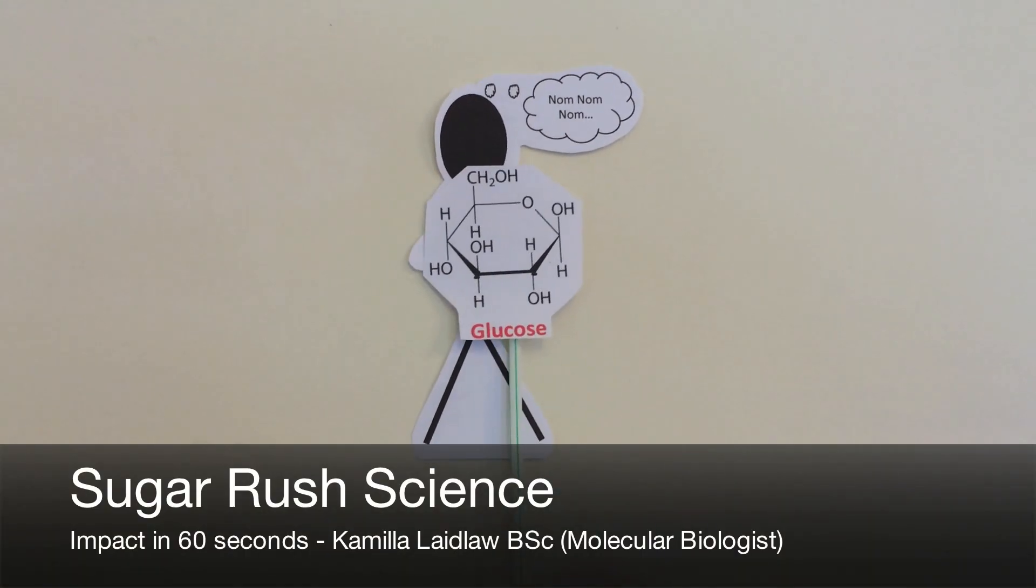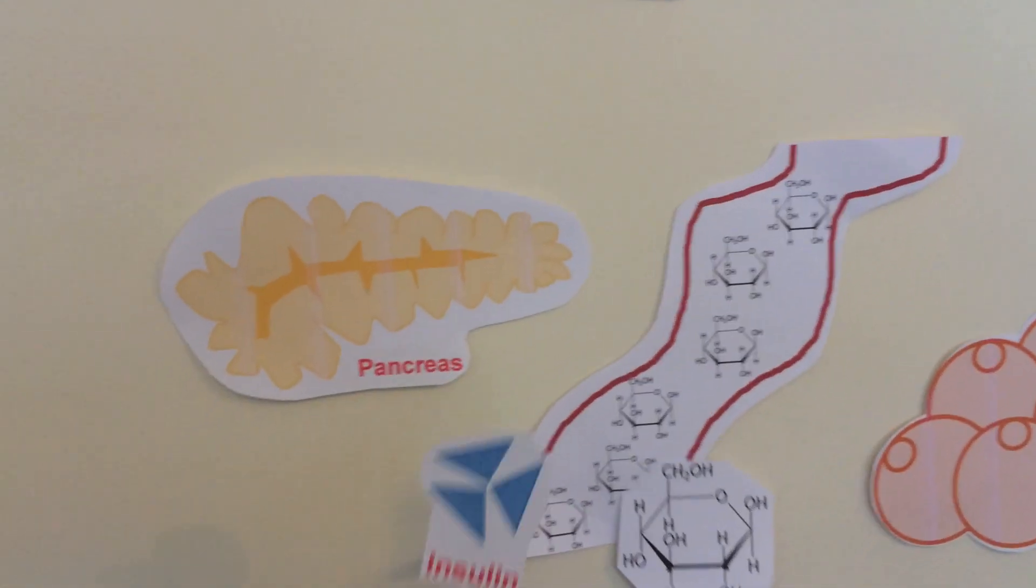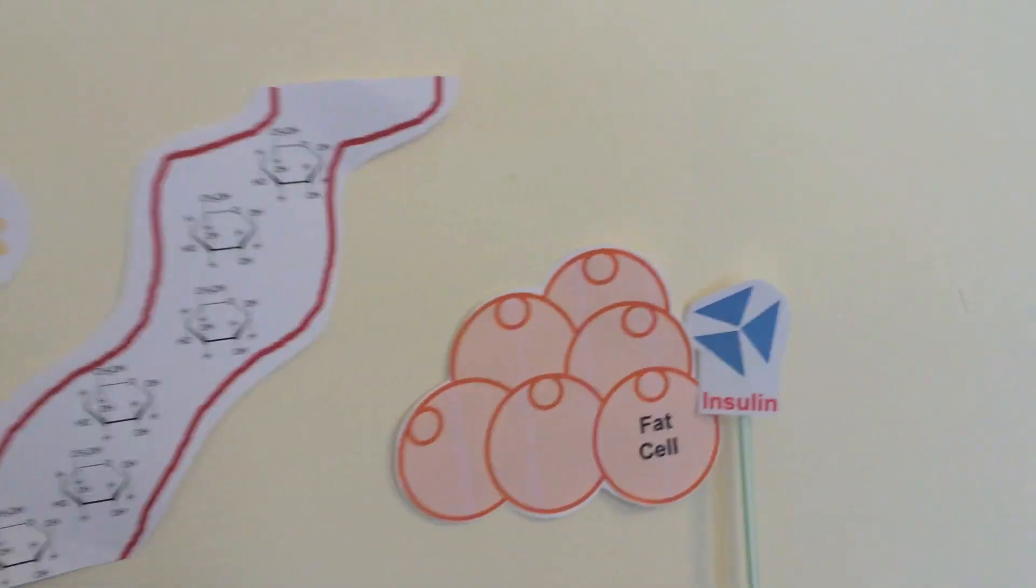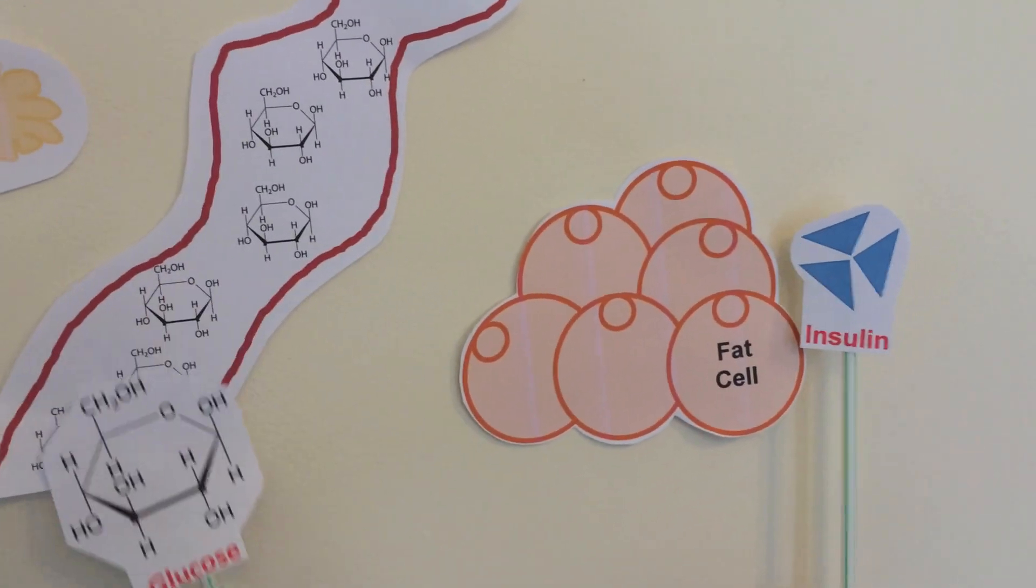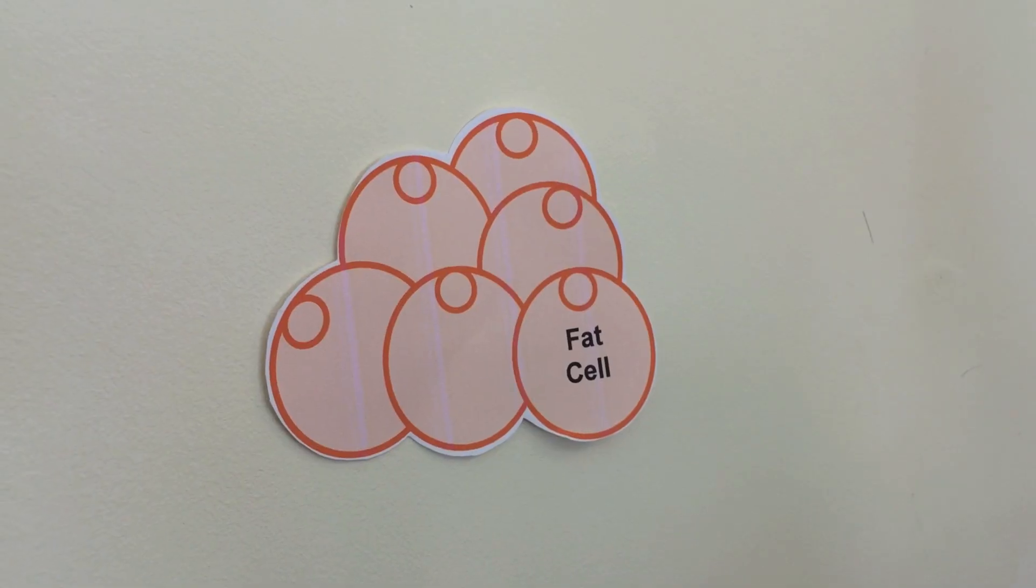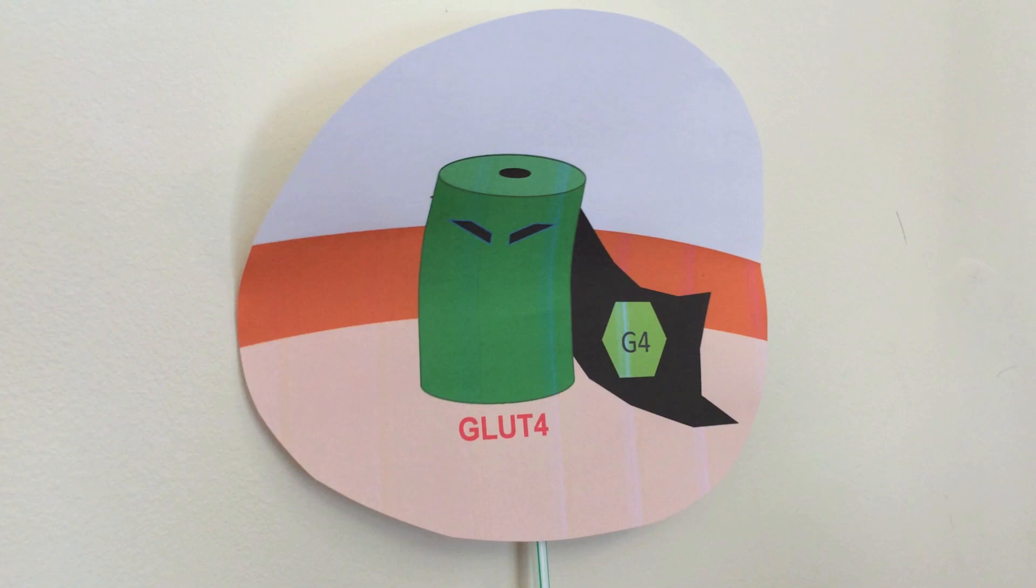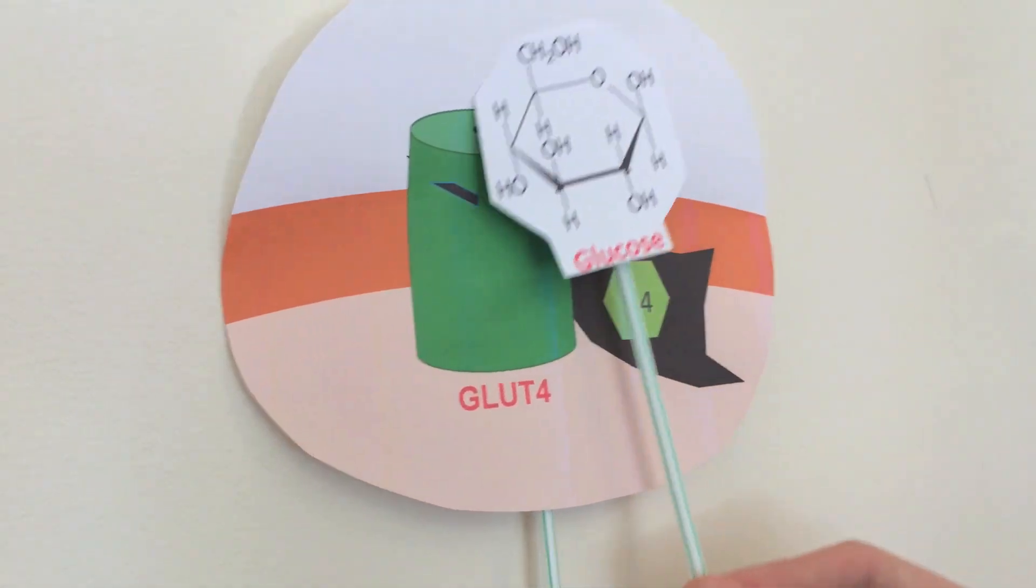After we eat, glucose sugar in our blood results in insulin being released from the pancreas. Insulin signals to fat and muscle cells to absorb the excess glucose. Introducing GLUT4, our super glucose transporter which responds to insulin, bringing glucose into the cell.